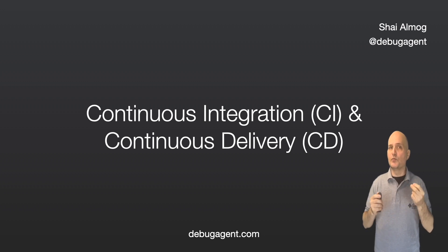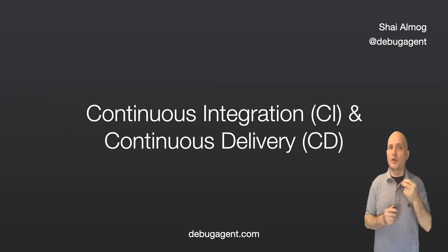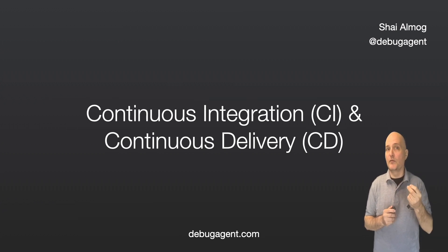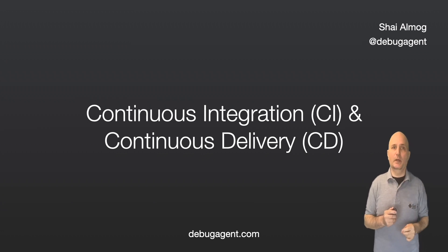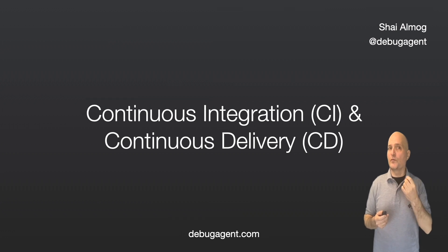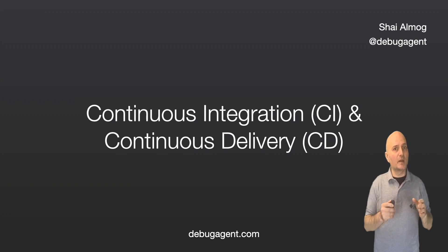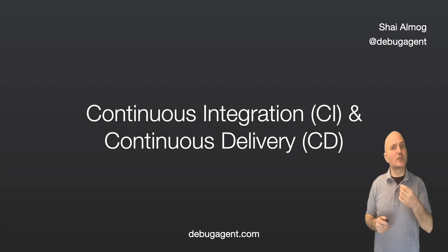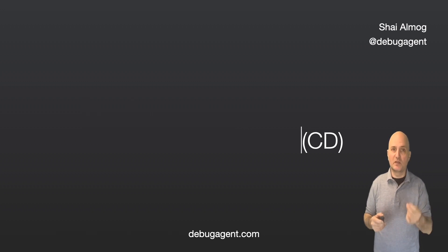CI/CD involves automated processes for building, testing, and deploying software. With CI/CD, developers can identify and fix bugs early in the development cycle, leading to faster and more reliable delivery of software. As a developer, CI/CD can help you by giving you a faster feedback loop, easing the process of changes to the code and real-time results. This helps you identify and fix any issues, which saves time and ensures that your code is always in a releasable state.